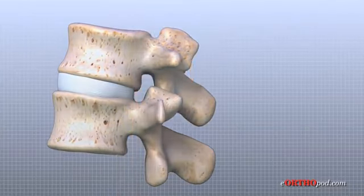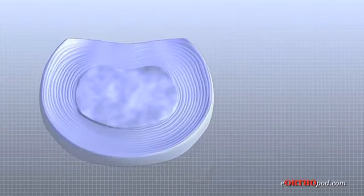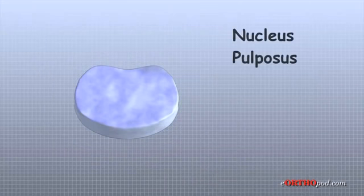An intervertebral disc is made up of two parts. The center, called the nucleus pulposus, is spongy and acts like a shock absorber to cushion the force between each vertebra.